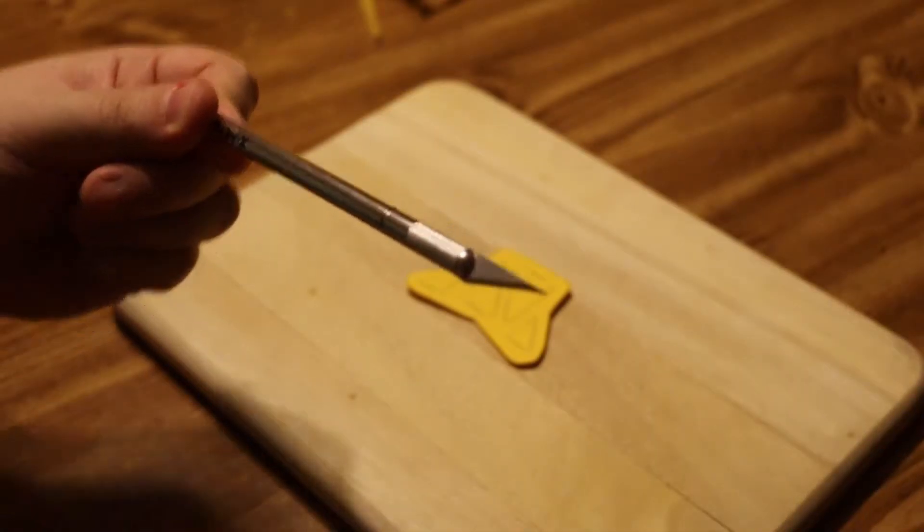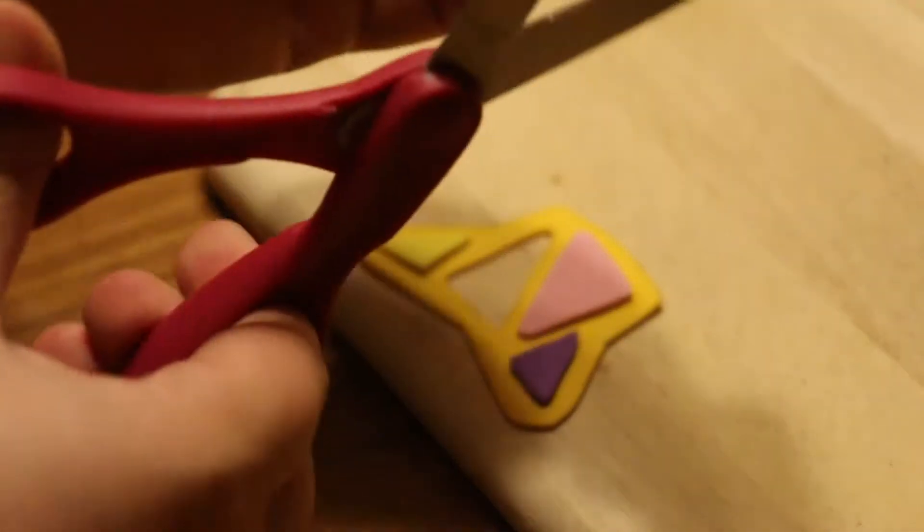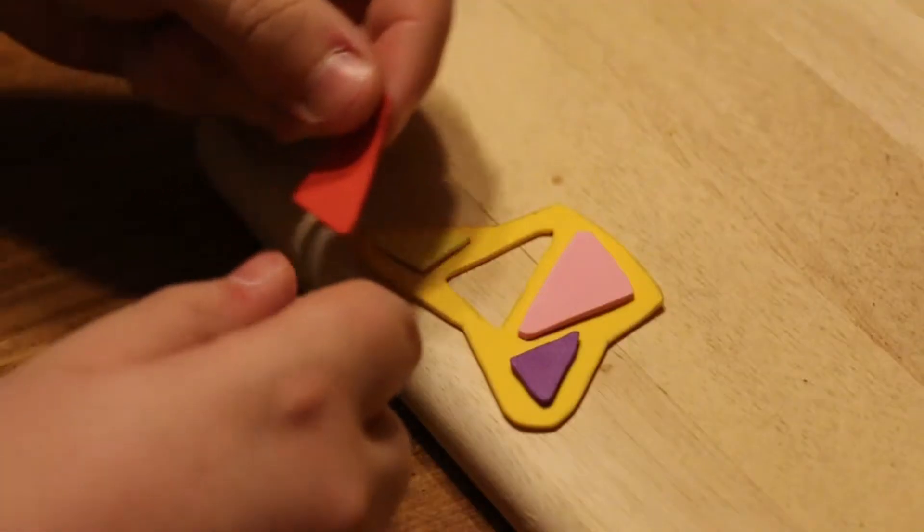Take an exacto knife and carefully cut out the center pieces. I align my inner pieces on the different color foam sheets and cut them out accordingly.